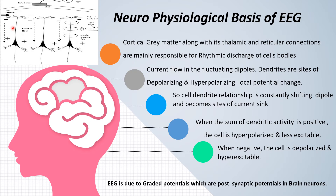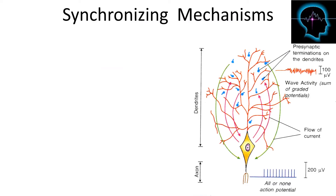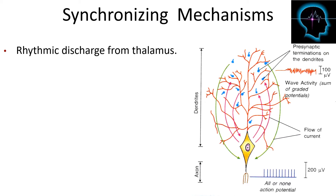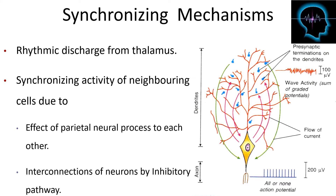In general, when the sum of dendritic activity is positive relative to the cell body, the cell is hyperpolarized and less excitable; when it is negative, the cell is depolarized and hyper-excitable. The EEG is due to graded potentials, which are summated post-synaptic potentials in the brain neurons. Rhythmic discharge from the thalamus and the synchronizing activity of neighboring cells are responsible for the synchronizing mechanism, which is due to neural processes acting on each other via inhibitory pathways.